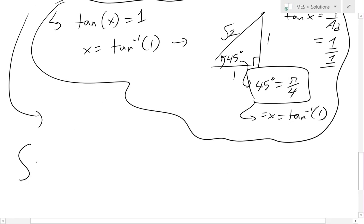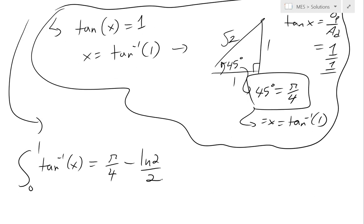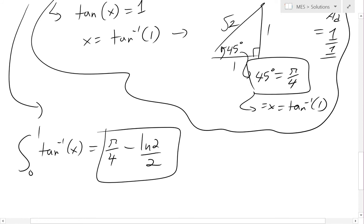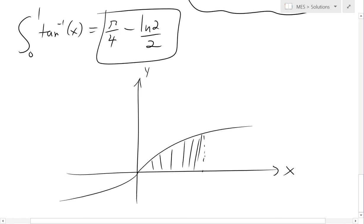So we get basically the integral from 0 to 1 of inverse tan of x equals pi over 4 in radians minus ln 2 over 2, and this is basically our final answer. And to get an idea of what this means is if you were to graph inverse tan of x, the function looks something like this. And basically from 0 to 1, it would be somewhere here. So what we just solved is the area under the curve, and this is inverse tan of x. And this is basically what we solved, which is the area under the curve.